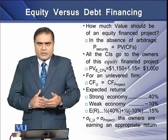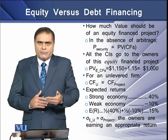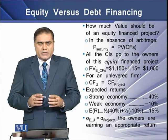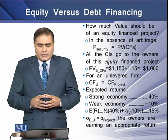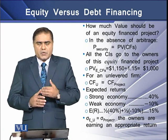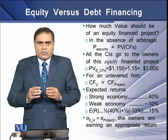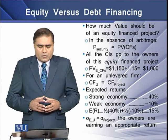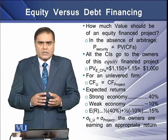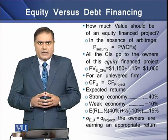Considering the expected return: if the economy is strong, we expect a return of 40%, but in a weak economy, a negative return of -10%. The expected return using these two values comes to 15%. This expected return of 15% equals the overall cost of capital of 15%, confirming that the riskiness of unlevered equity equals the riskiness of the project, and the owners are earning an appropriate return.